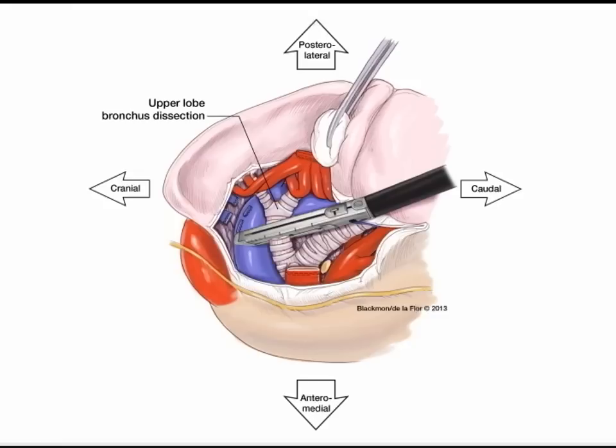Once you have stapled and divided the bronchus, you will find several small pulmonary artery branches remaining behind the bronchus coming from the pulmonary artery and going up to the remaining left upper lobe. Those are dissected, encircled, stapled, and divided, leaving nothing but the fissure holding the lung. Since you started with a posterior approach and extended it apically inferior to the aorta, taking care to preserve the phrenic nerve and the recurrent laryngeal nerve, and performing a mediastinal lymph node dissection, all you have left to perform is the fissure division.